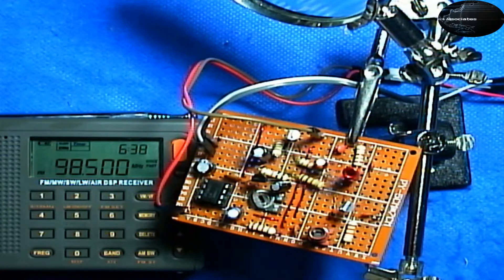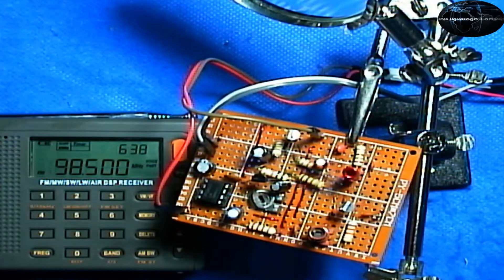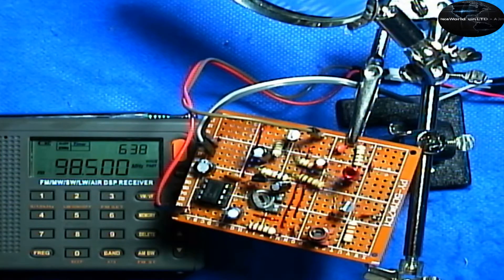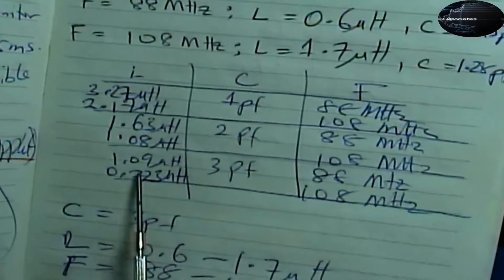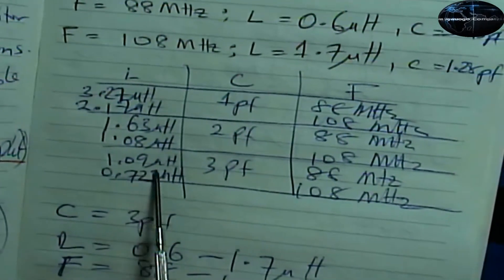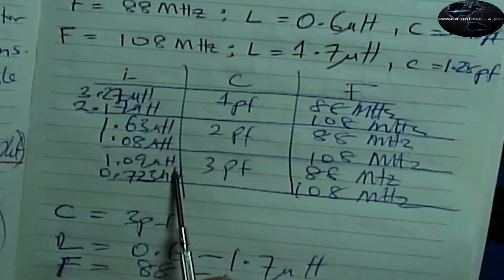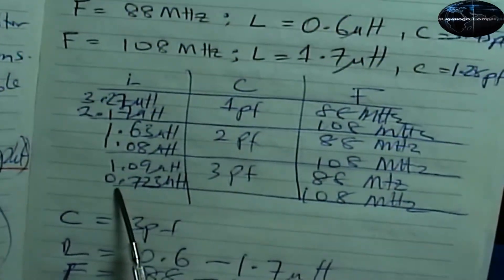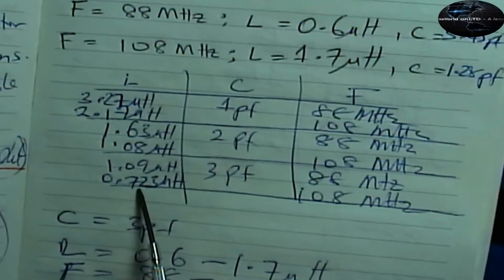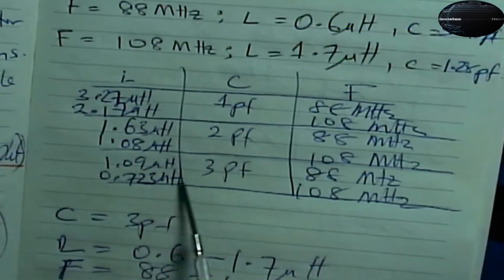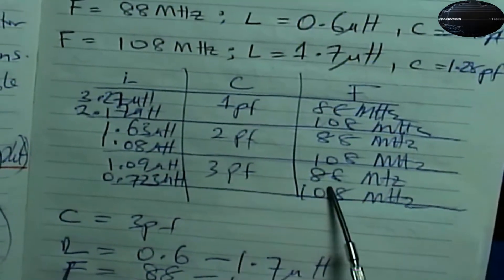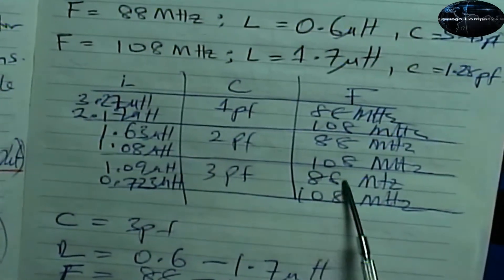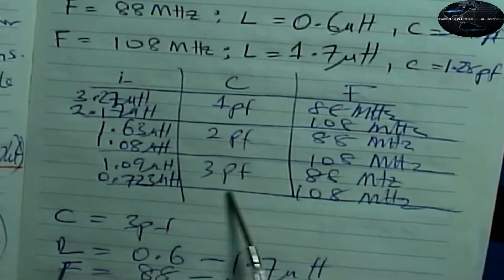Based on our calculations, we plugged in the values, the minimum value and the maximum value of this inductor, and we found out, I'm going to read out the numbers to you. At 1.09 microhenry and fixed capacitor of three picofarad, and also at 0.7123 microhenry at the same capacitance, we were able to cover 88 to 108.